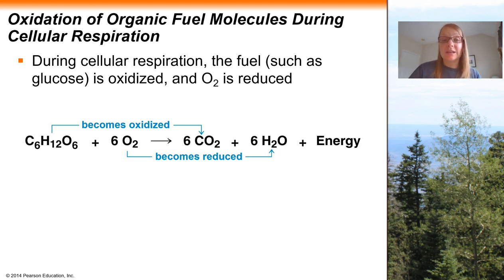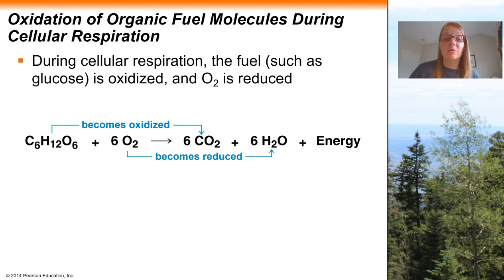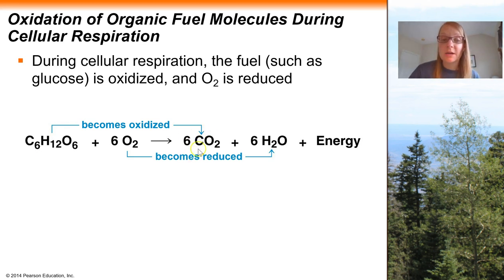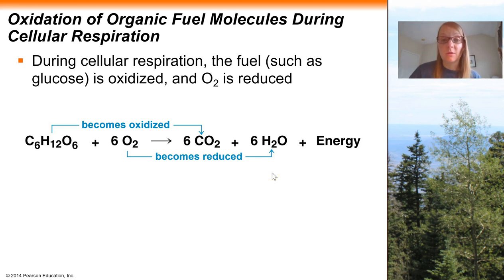The way that we extract energy from glucose is essentially by removing electrons away from it, allowing those electrons to give up energy until eventually they end up with oxygen in their lowest energy form. Because we're removing electrons from the glucose, we can say that the glucose will become oxidized — loss of electrons — to form carbon dioxide. And then oxygen is going to be the final resting place for those electrons after they've given up all their energy, so oxygen, by accepting the electrons, is going to become reduced to eventually form water.